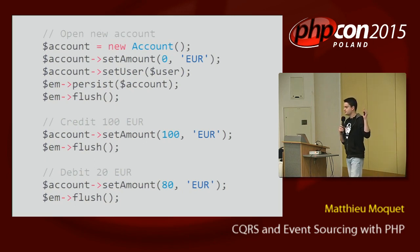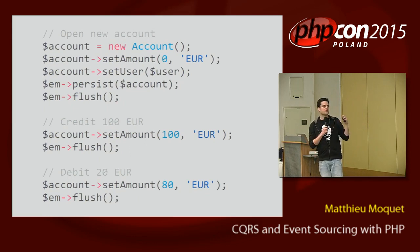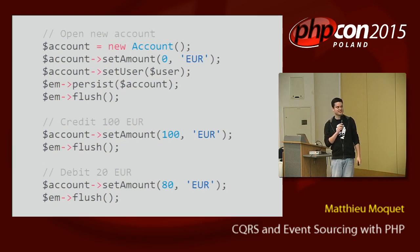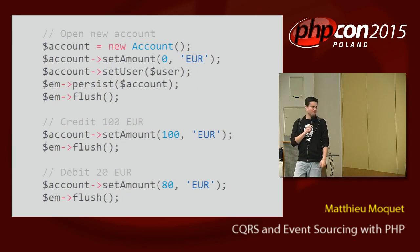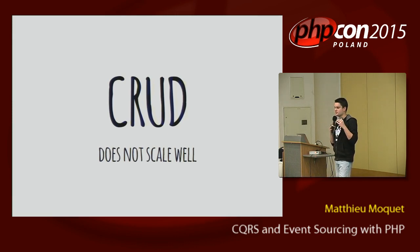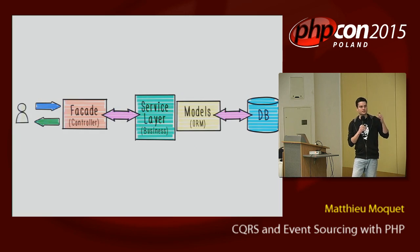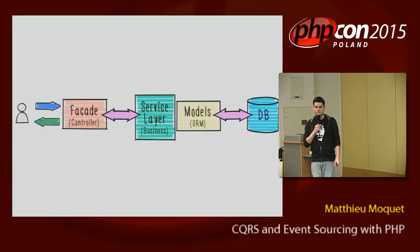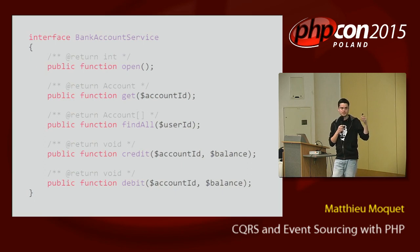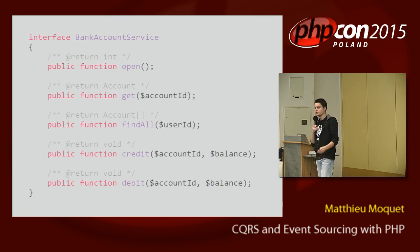So basically, when you bootstrap an application you start with something like this. For example, using Doctrine ORM — a very simple application with a bank account. I want to create and open an account, make a debit on it, and get all the accounts created previously.